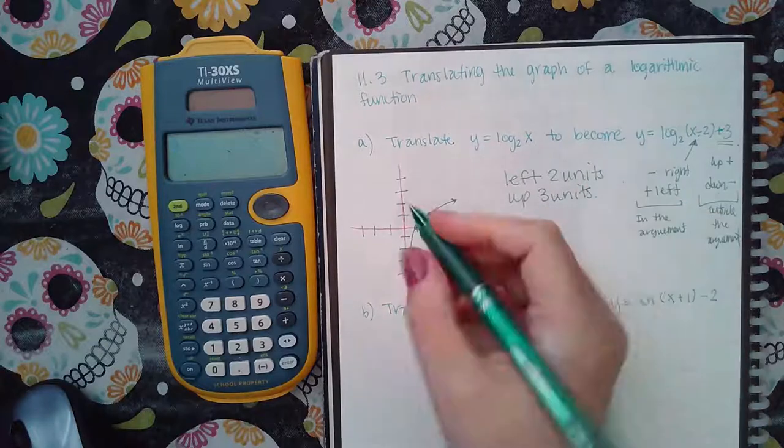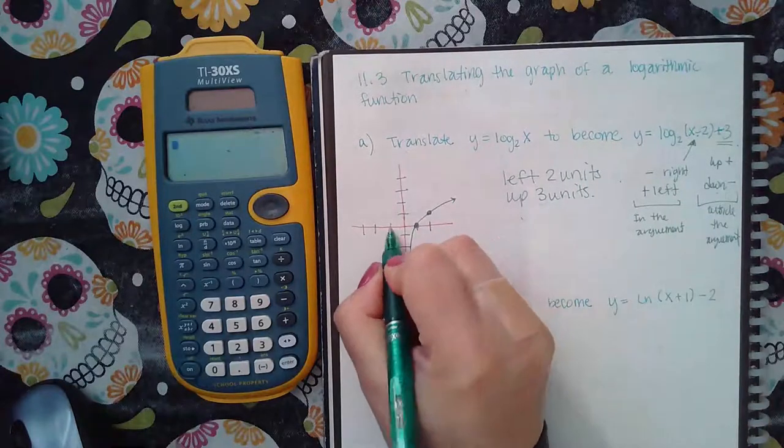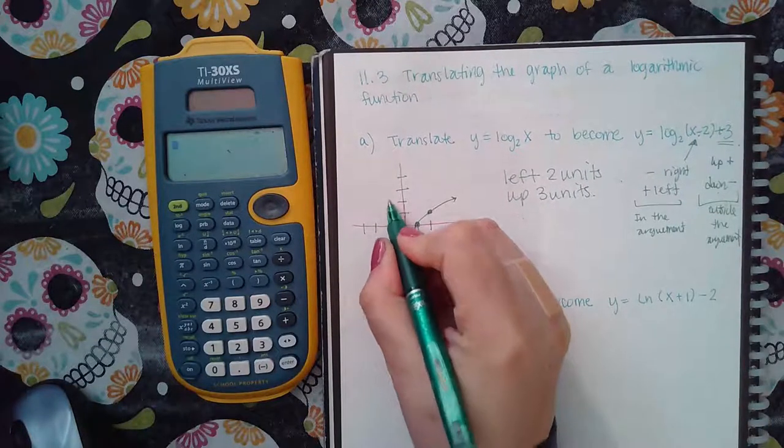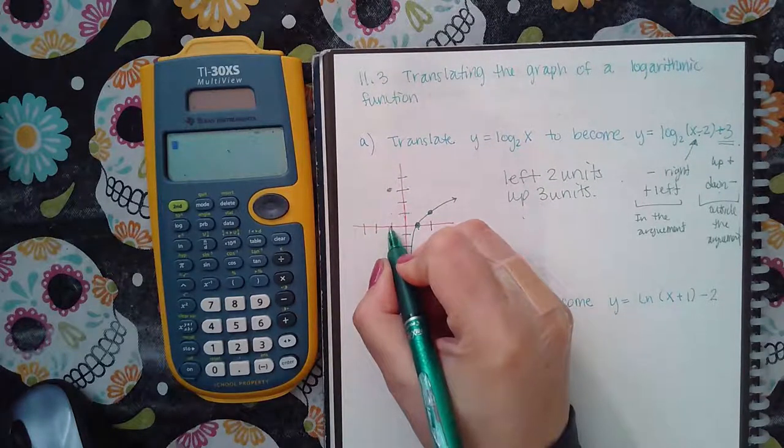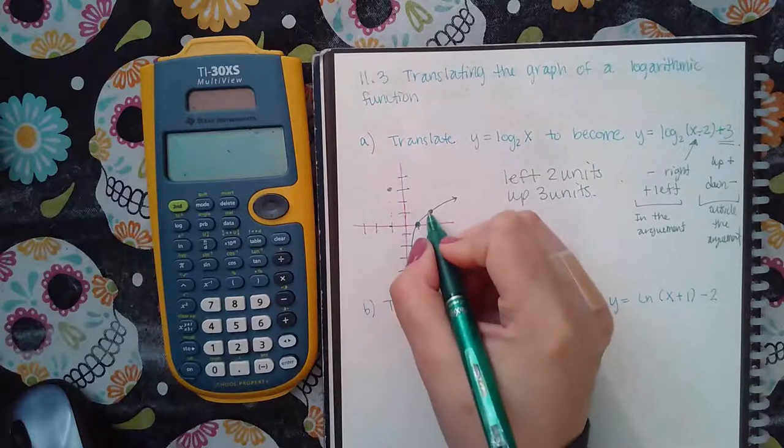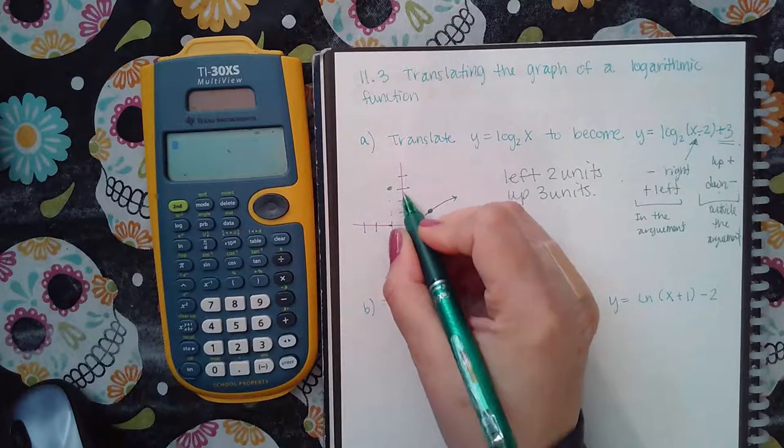Now basically what you would do is you would just grab it and move it around. But for me I've got to take this point and move it right two and then up three, and then I've got to take this point and move it right two and then up one two three.